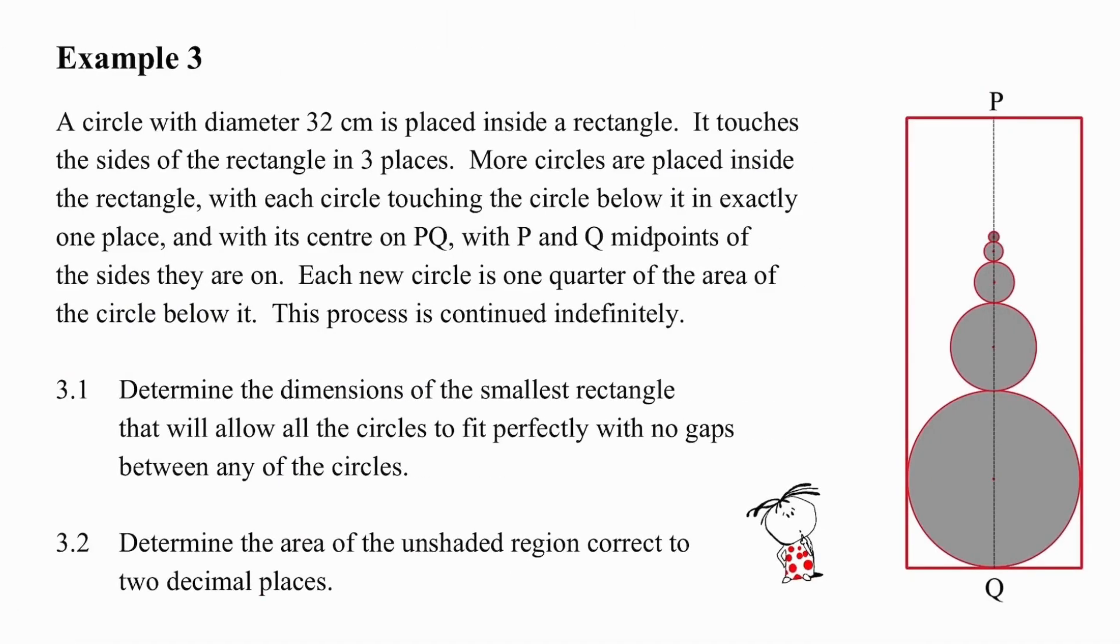The final question involves circles and a rectangle. We are told that we have a circle with a diameter of 32 centimeters placed inside the rectangle. It touches the sides of the rectangle in three places. What's important about that is that the distance across, which is the diameter of the circle, is also the width of the rectangle. We are also told that more circles are placed inside the rectangle with each circle touching the circle below it in exactly one place and with its center on the line pq, with p and q midpoints of the sides they are on. In other words, pq is the line running down the center of the rectangle. Each new circle is one quarter of the area of the circle below it and this process is continued indefinitely. I want you to pause the video and try each question on your own, then I will give you a hint and then you can try again on your own.